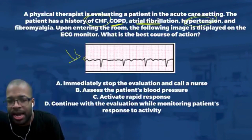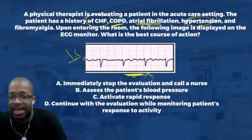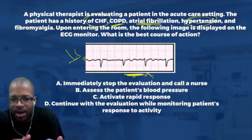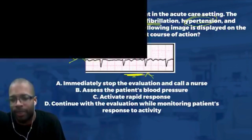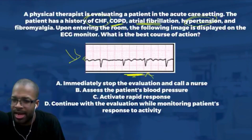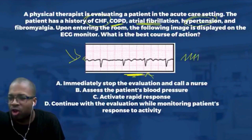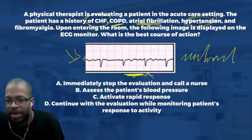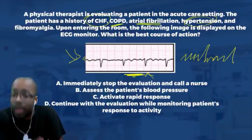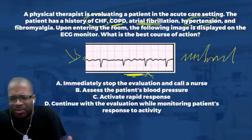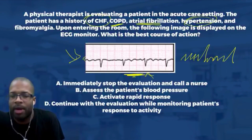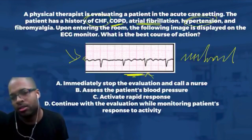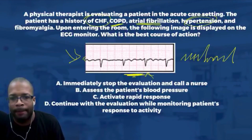Continuing down the line: I see more squiggly, undefined P waves — not defined at all. This leads me to believe I'm looking at atrial fibrillation. Atrial flutter is very consistent; it has P waves in a sawtooth pattern, then a QRS, then another sawtooth pattern. But atrial fibrillation is erratic — P waves just popping up all over the place. So what I'm really seeing here is not a PVC — I'm seeing atrial fibrillation on this ECG.